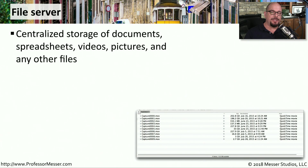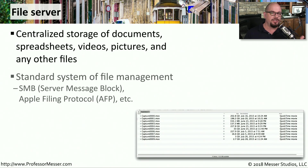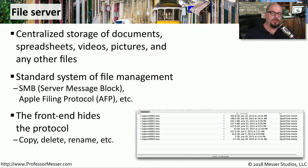Most organizations need a central server to store documents, videos, or any other files in use by their users. These file servers use a standard form of file management. In Windows, that's usually SMB, or Server Message Block. On Mac OS, you're probably using Apple Filing Protocol. Your users don't know anything about SMB or AFP — they simply use the file manager in their operating system, and the protocols handle all of these transactions.